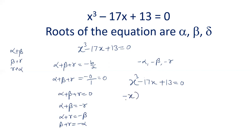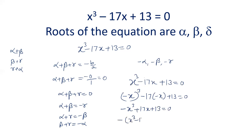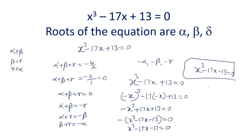Put minus x into the equation: (-x)³ - 17(-x) + 13 = 0, which gives -x³ + 17x + 13 = 0. Taking minus sign common: x³ - 17x - 13 = 0. So the new equation is x³ - 17x - 13 = 0, and its roots are alpha plus beta, beta plus gamma, and gamma plus alpha.